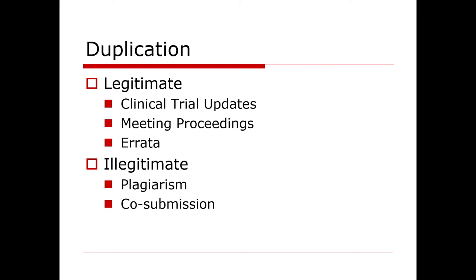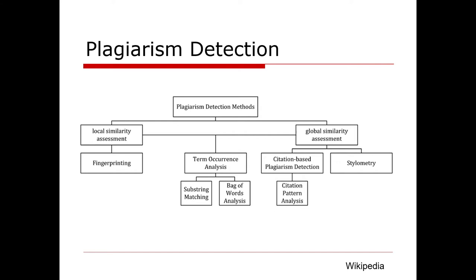Co-submission is the submission of the same article or same manuscript to two different journals. There are many tools available for scientists and for journal editors for plagiarism detection. I serve on the editorial board of a number of different journals and these plagiarism detection tools are widely used. They can be looking at local similarity assessment — something that looks at what is going on in that area with the specific part of the manuscript — or there can be a global similarity assessment where, in total, how this looks compared with other data that's out there.